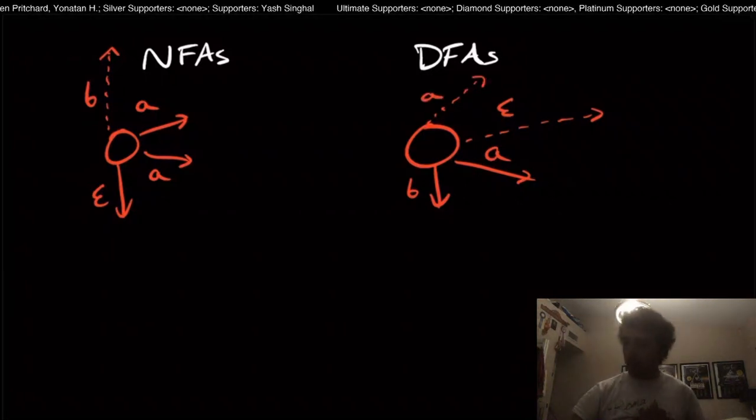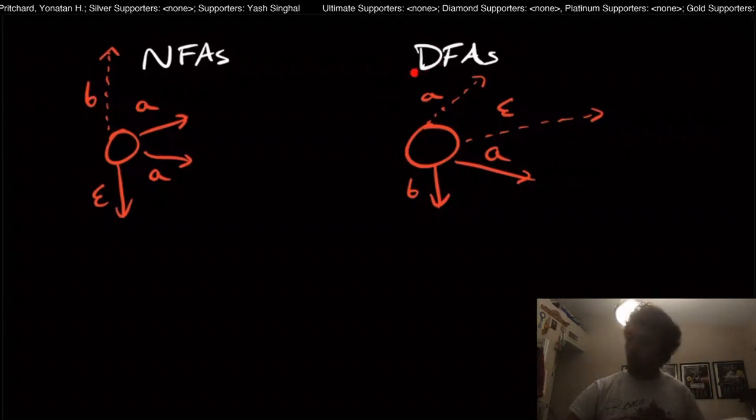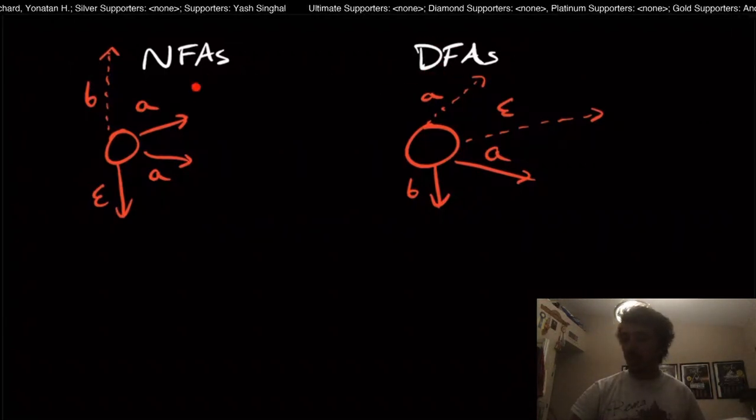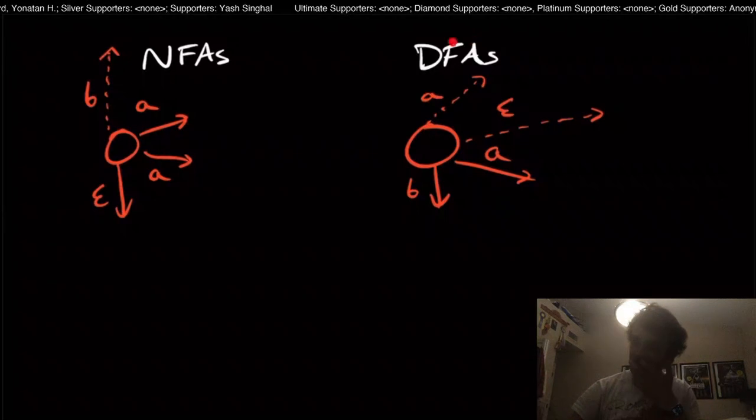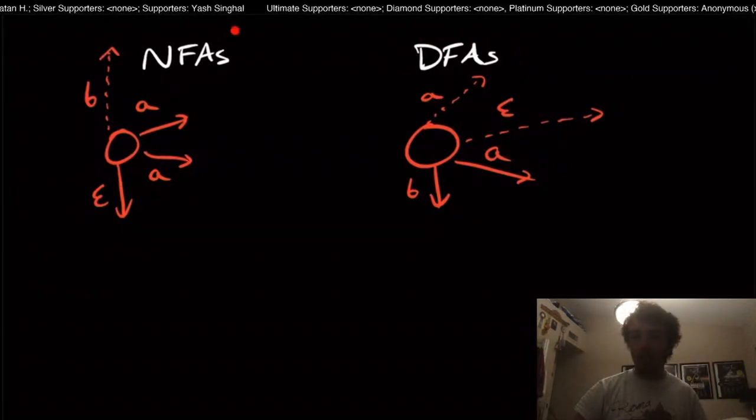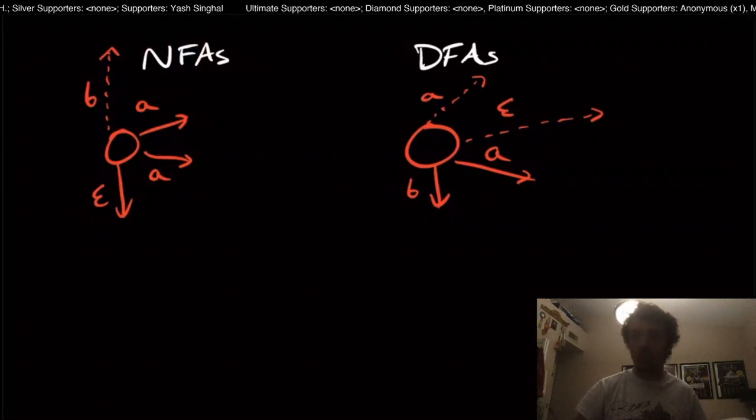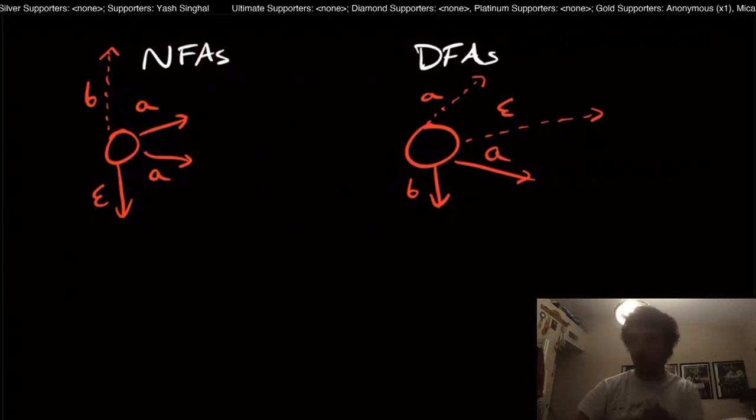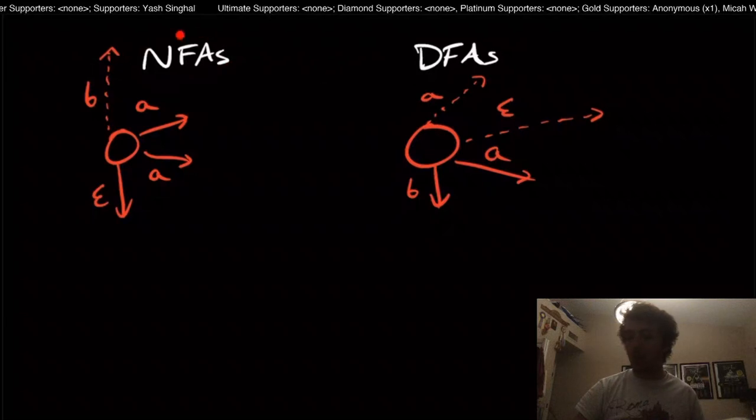So the question is, what is the relationship between DFAs and NFAs? Well, DFAs, we know how to solve some problems with them. NFAs, we can actually solve a lot more problems with them. We can solve the concatenation problem. We can solve the star problem.